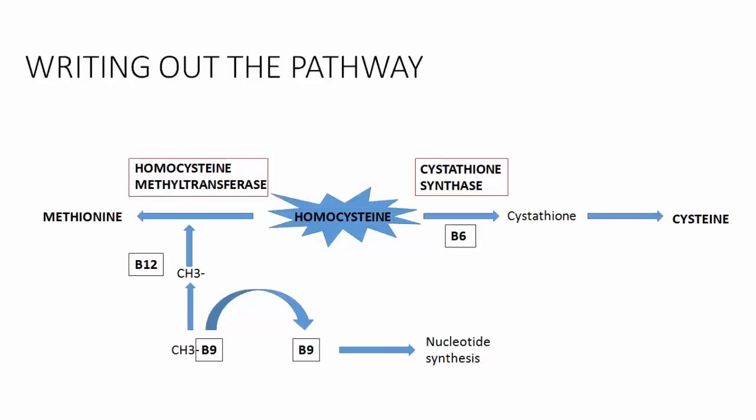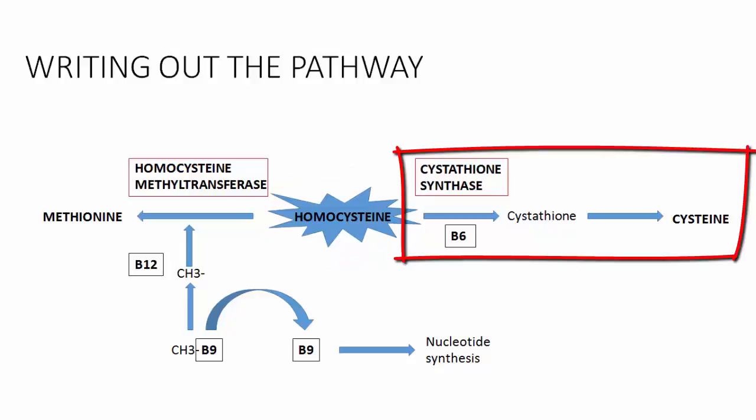So let's actually write out the pathway for elimination of homocysteine. You can see that homocysteine is actually at the middle, and this is to emphasize the fact that it's so important to get rid of homocysteine that the cell has actually developed two separate pathways to get rid of it. Looking to the right, one of these pathways involves forming cysteine.